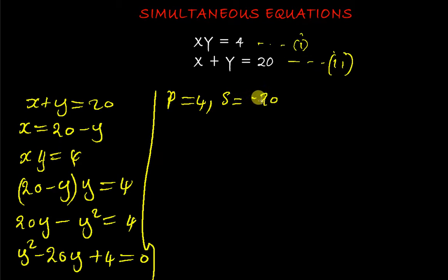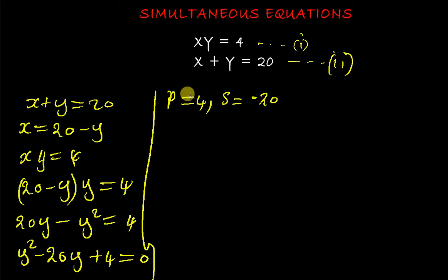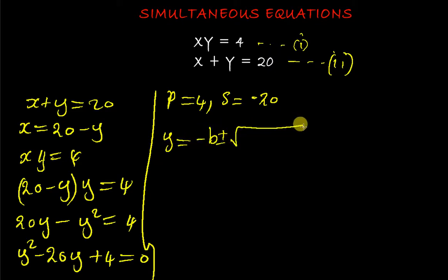If you can't find such numbers, or don't want to spend time searching, you can go straight to the quadratic formula: y = (−b ± √(b² − 4ac)) / 2a.